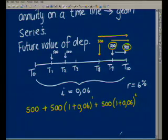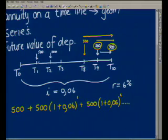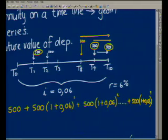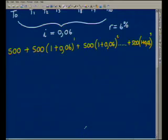This one here would have grown for four years, this one for five years. But the first deposit — how many years would it have grown for? Nine years. So that first deposit is 500 times (1 + 0.06) to the exponent of 9. Can you see that what this is, is actually a geometric sequence?